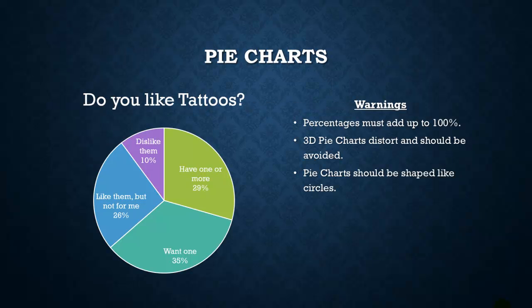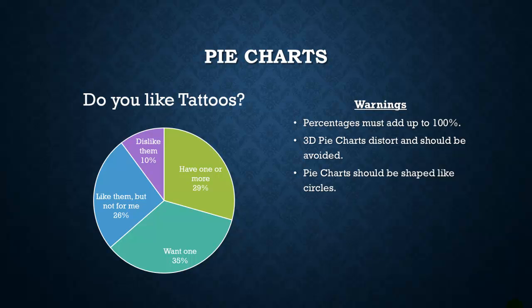Here's an example pie chart using the data we've been working with. About 25.8% of the sample said they like tattoos but it's not for them, so we'd want a little over a quarter of the circle for that group. When making a pie chart — most software will create them automatically — you have to be careful. First, make sure the percentages add up to 100%. They won't if people fall into more than one category or are allowed to select more than one option.